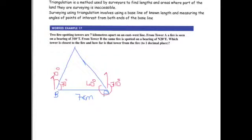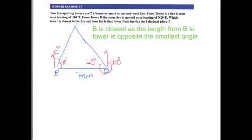We're asked to find which tower is closest to the fire. You can either work out both lengths and find the smallest one, or remember that the smallest length is always opposite the smallest angle. So we can see that B is going to be closest to the tower as the length from B to the tower is opposite the smallest angle.